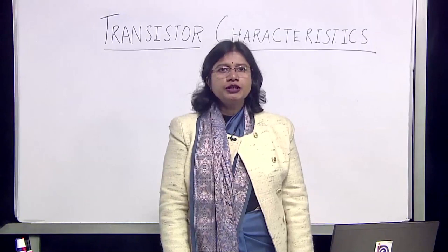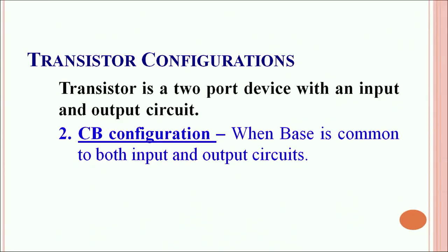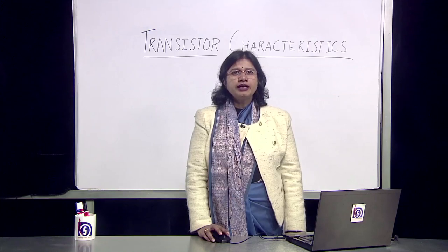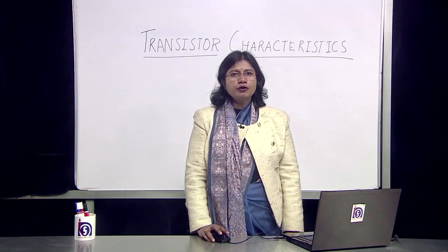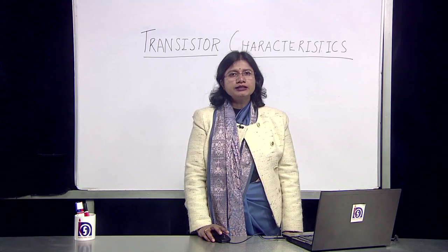Now we move on to the common base configuration. As the name suggests, in the common base configuration the base is common to both the input and the output circuit. Unlike the common emitter configuration, even though we don't get large power gain or current gain, these circuits are suitable for providing a regulated voltage supply.